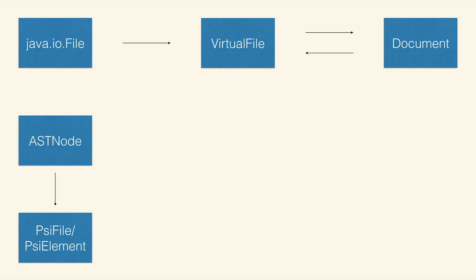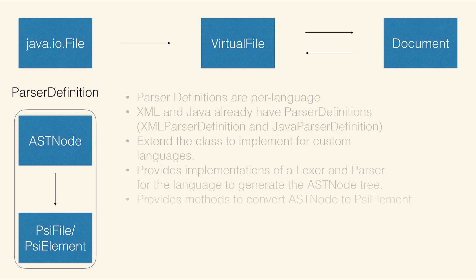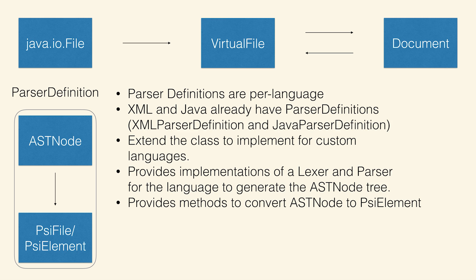The AST node and PSI element are part of their own creation mechanism called the parser definition. Unless you're writing a language plugin providing things like syntax highlighting, you won't have to worry about this. The default ones — Java and XML — have parser definitions already written, and because they're open source, you can interface with them. The parser definition is responsible for taking a parse stream, taking a buffer, and turning it into these classes. You supply two classes to it: the lexer and the parser. Text goes into the lexer and gets turned into tokens; those tokens get passed to the parser, which outputs the AST tree.